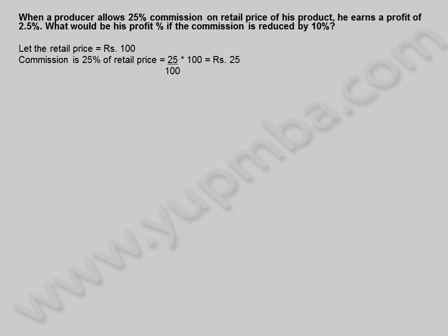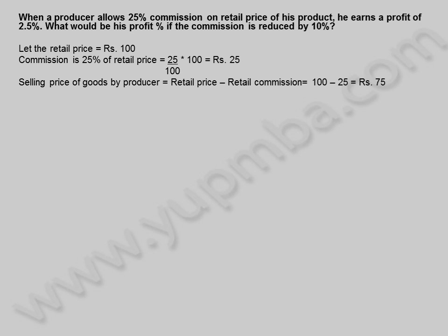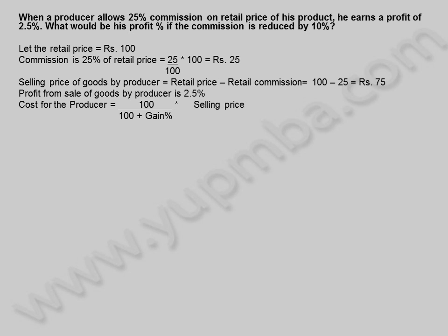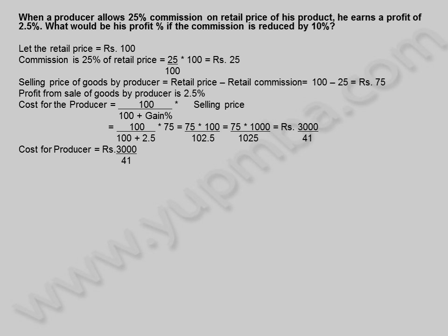Selling price of goods by producer = retail price minus retail commission = 100 − 25 = 75 rupees. Profit is 2.5%. Cost for the producer = 100/(100 + 2.5) × 75 = 75 × 1000/1025 = 3000/41 rupees.